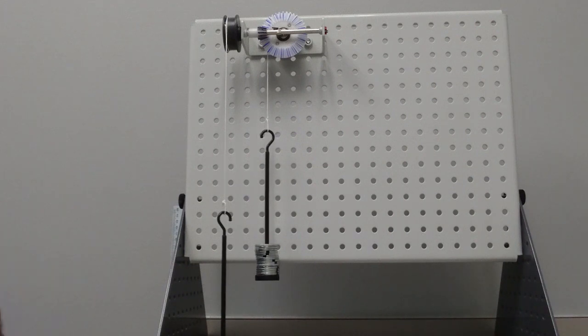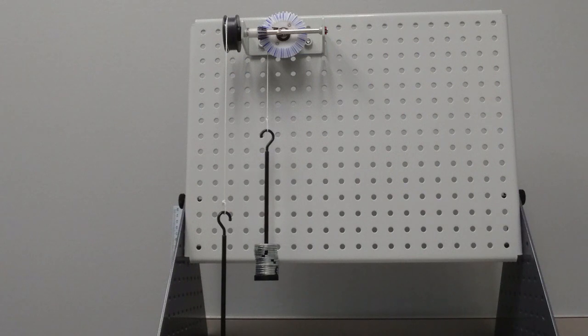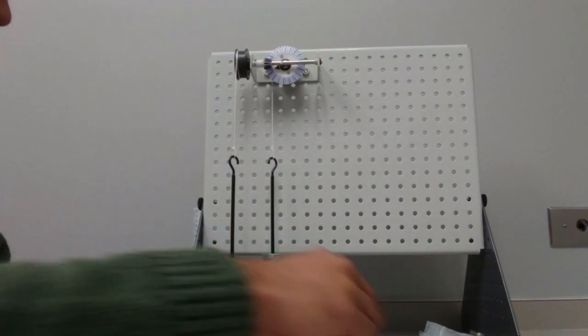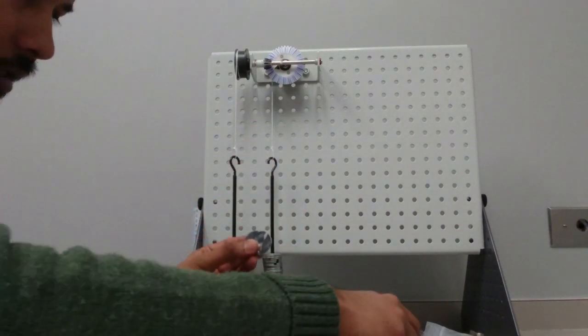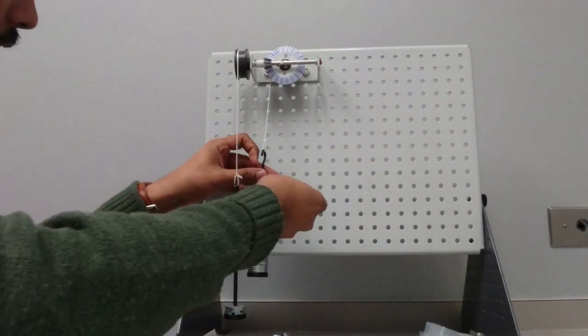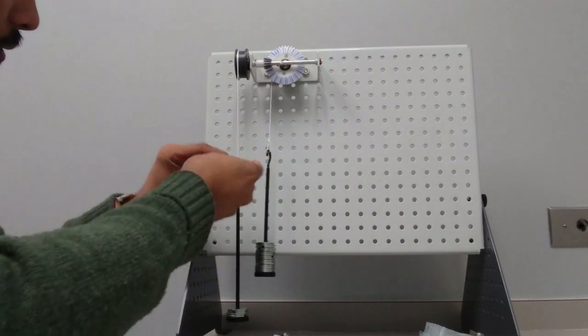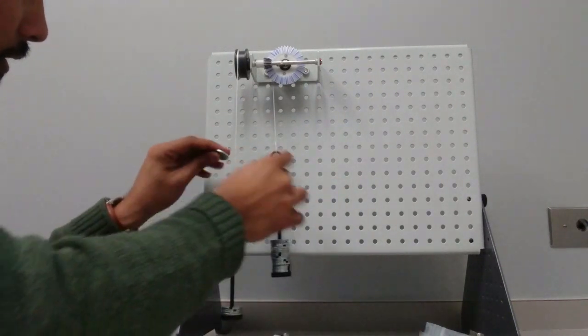Now we're going to run several tests at different loads and we'll see how much effort we need to raise the load. To raise a 200-gram load, what I'm going to do is I'm going to add five of these discs: one, two, three, four, and five.